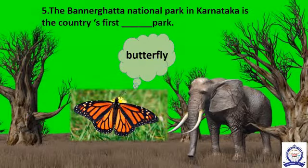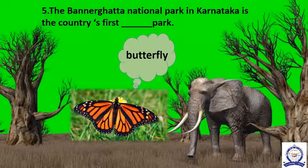Fifth question: the Bannerghatta National Park in Karnataka is the country's first Butterfly Park. The answer is Butterfly.